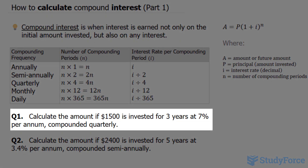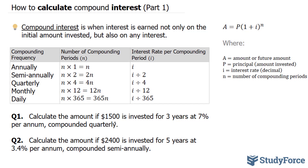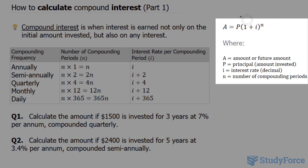Let's pretend that you are asked to calculate the amount if $1,500 is invested for 3 years at 7% per annum, compounded quarterly. In this case, we'll use this formula shown here: A is equal to P bracket 1 plus i to the power of n. And these letters are defined below.